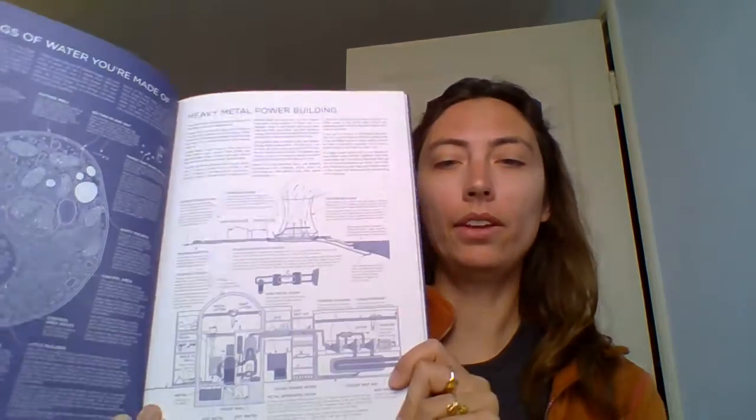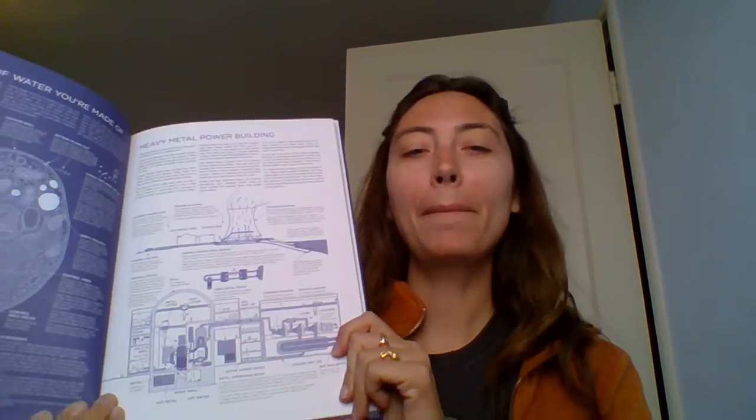And the other thing I really like about this book is that you could skip around in it, but it's really good to go through one at a time, because the concepts build on each other. Like, he does this, let's see, the nuclear power plant is called the heavy metal power building.